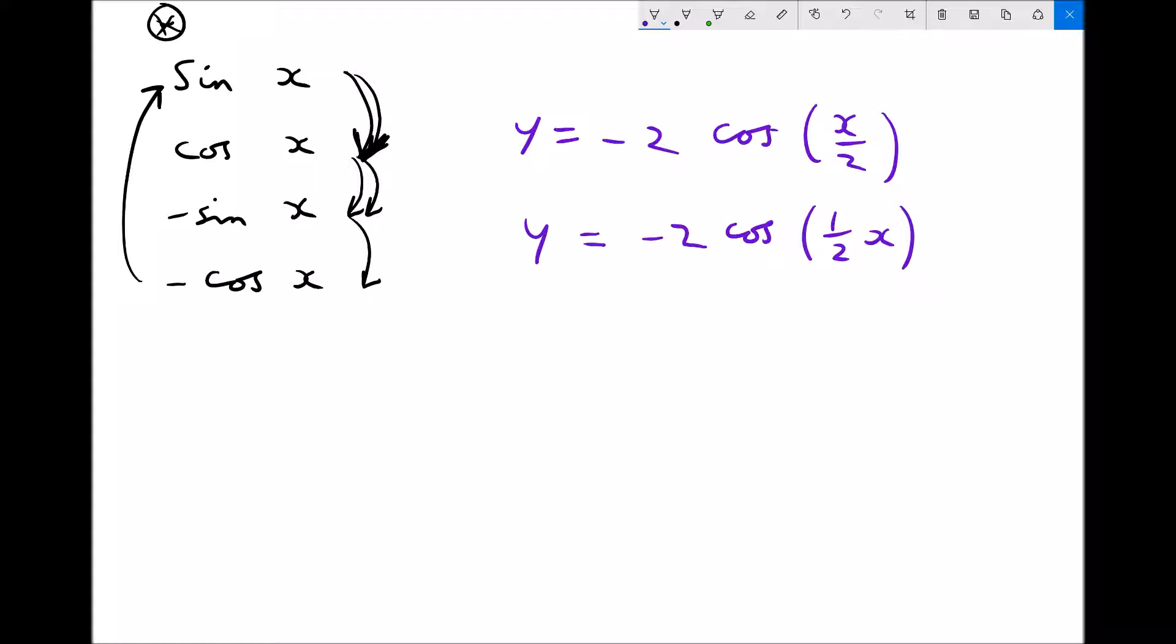I'm going to change that to read y equals minus 2 cos a half x. Now the reason I've rewritten that is because I know when I differentiate this, I need to multiply the coefficient of cos a half x by a half. This needs to multiply down here. So now I can differentiate that. I've got dy/dx equals, well a half times 2 is 1.